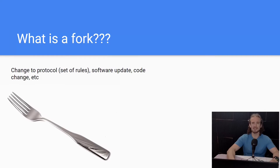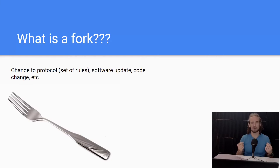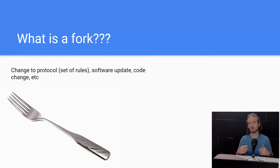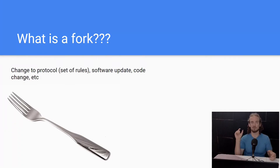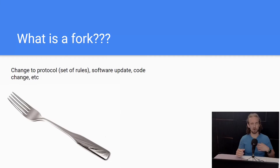So what is a fork? A fork is a change to the protocol. A protocol is simply the set of rules that governs a blockchain or a cryptocurrency. For example, the block size of the Bitcoin and Bitcoin Cash blockchains would be one example of the protocol. There are other protocol rules such as proof of work, proof of stake, consensus mechanisms, block time — a lot of different things. We're simply doing a software update, changing how it works.